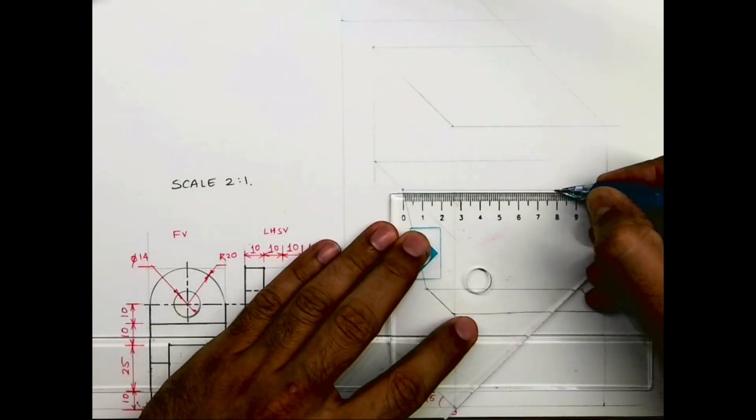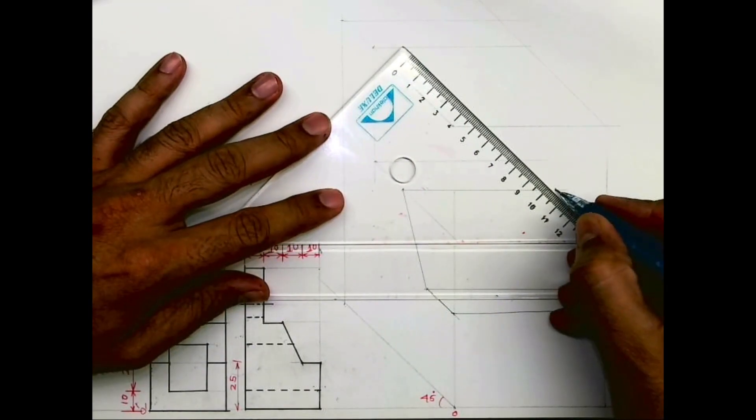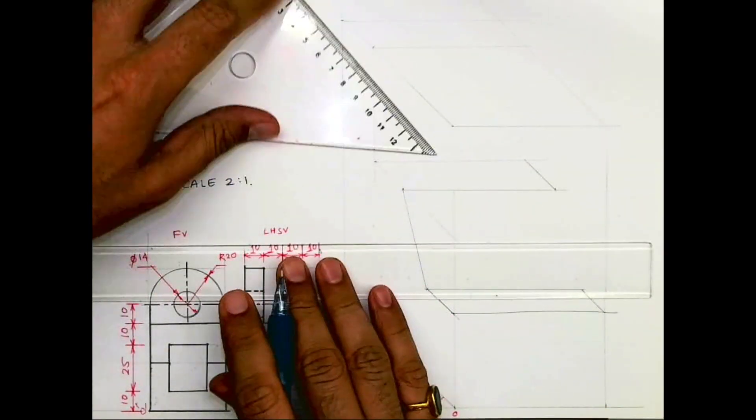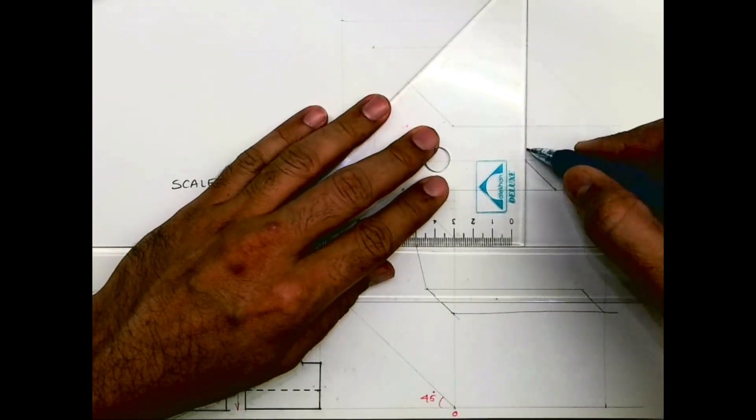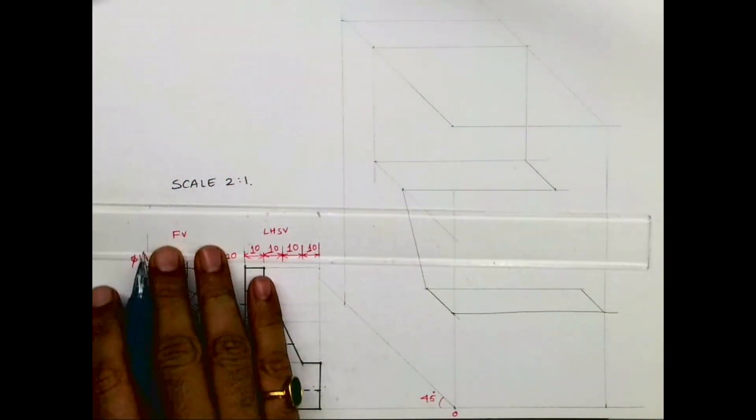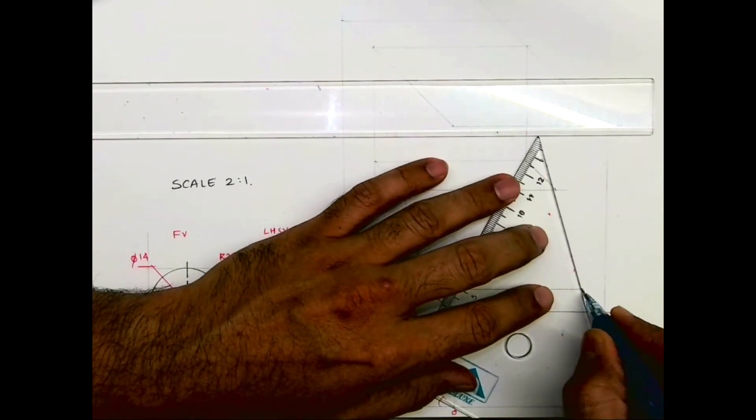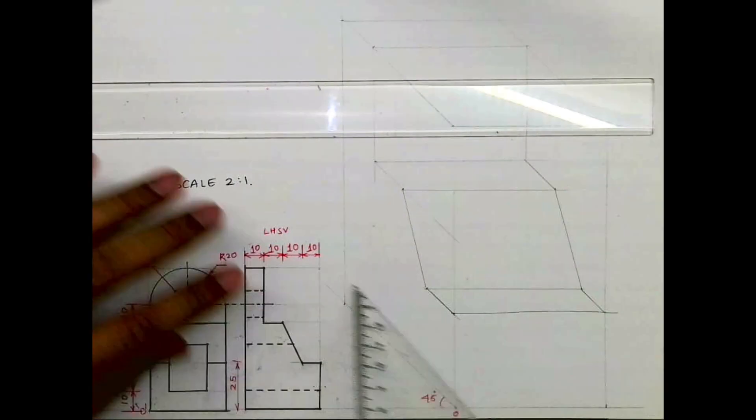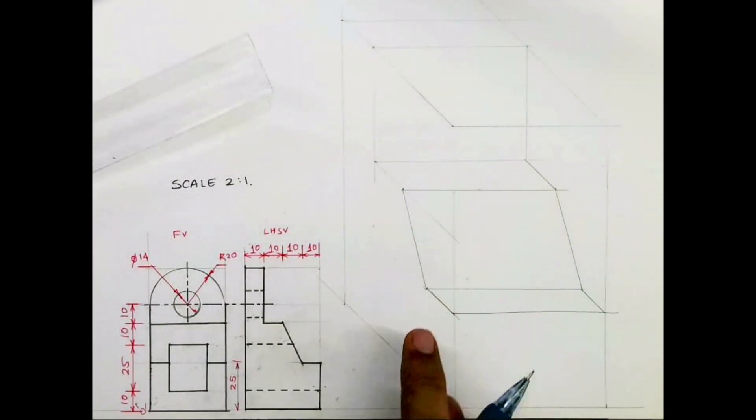Then from here we'll draw a line like this. This is 80, this is 80. Again we'll draw a line like this, this is 80. Then we'll go up, we'll join this slope. See, this part is done.